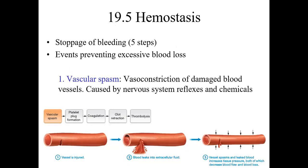Hemostasis — 'hemo' means blood and 'stasis' means stopping. There are five mechanisms to prevent blood loss. Step one is vascular spasm: the blood vessel constricts due to smooth muscle in the vessel wall. As shown in the diagram, this doesn't completely stop the leak — it only temporarily slows blood loss and doesn't fix the underlying problem.